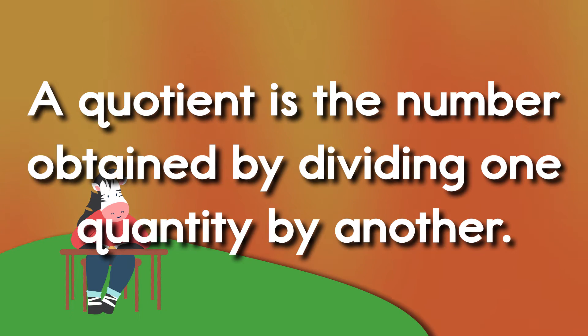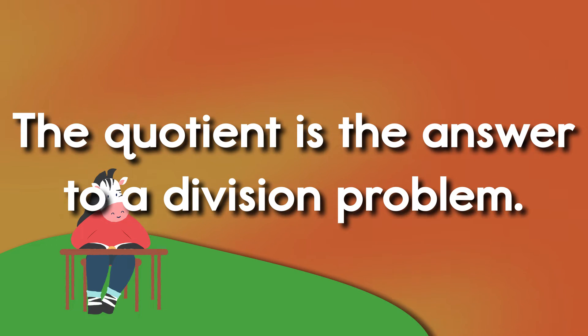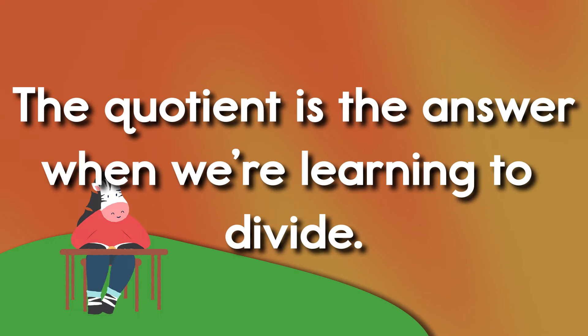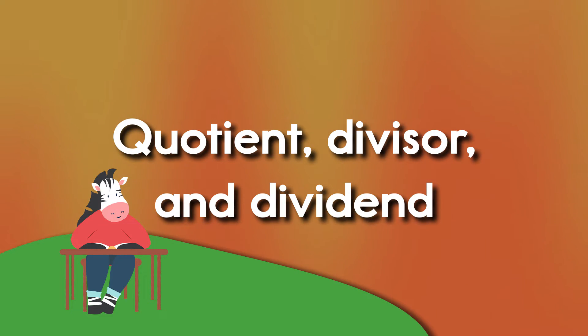A quotient is the number obtained by dividing one quantity by another. In 24 divided by 6 equals 4, the number 4 is the quotient. The quotient is the answer to a division problem. Take 12 divided by 3 — 4 is the answer you will find.